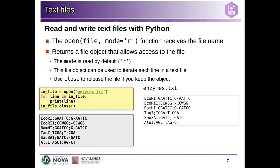One way we can do this, especially if the file is very large and we don't want to put everything at once in memory, is to use this object as an iterable in a loop. This will give us, for each iteration, one line in the file. This assumes that the file is a text file, and it will look for that newline character to see where each line ends, giving us one line at a time.